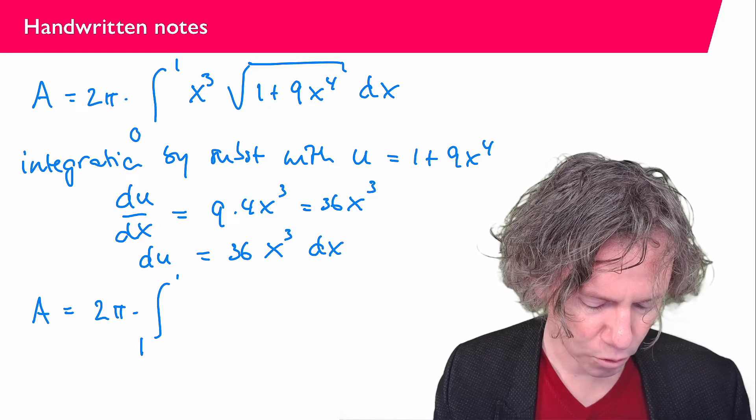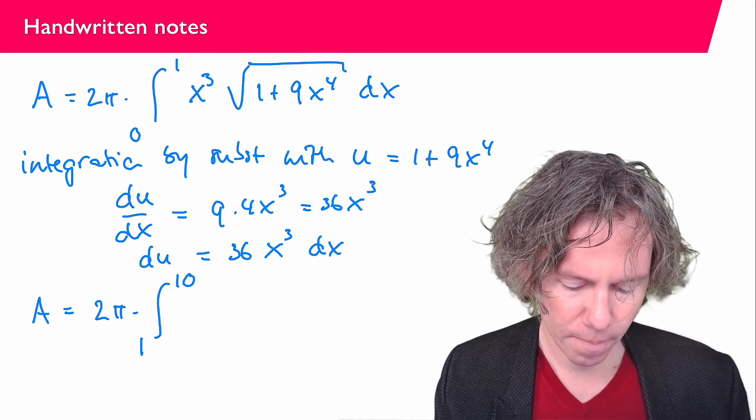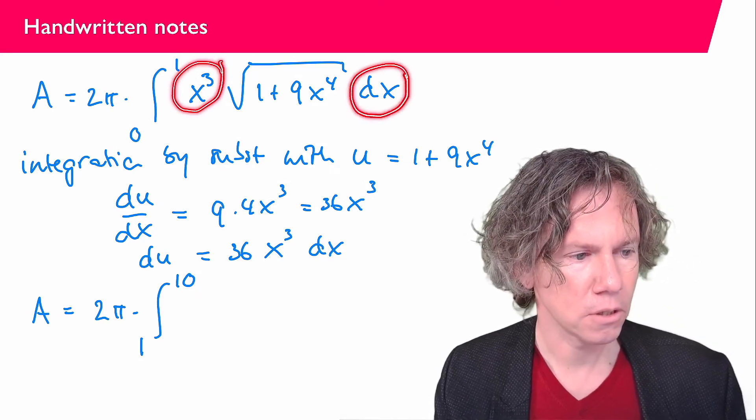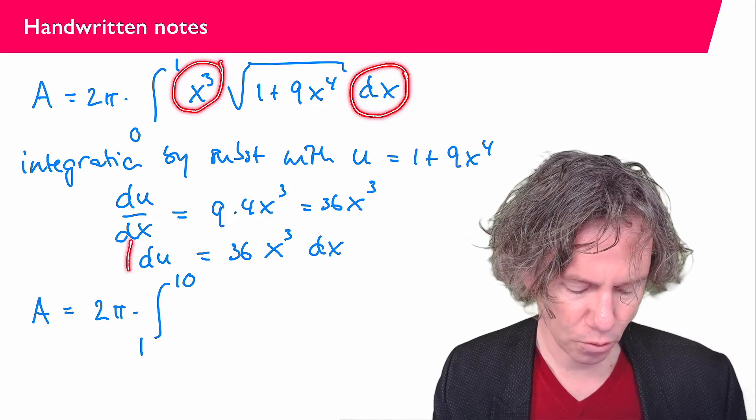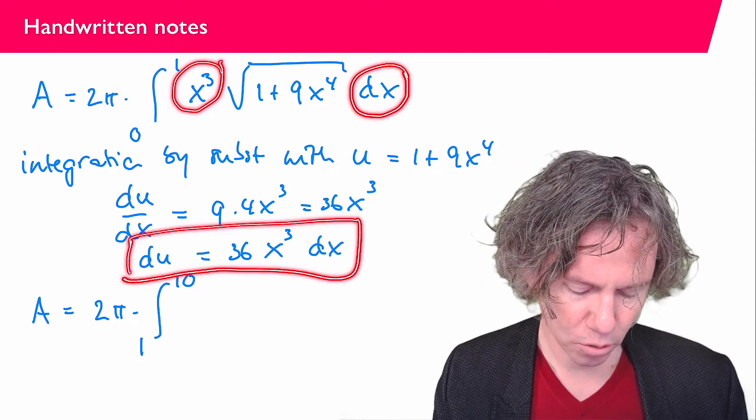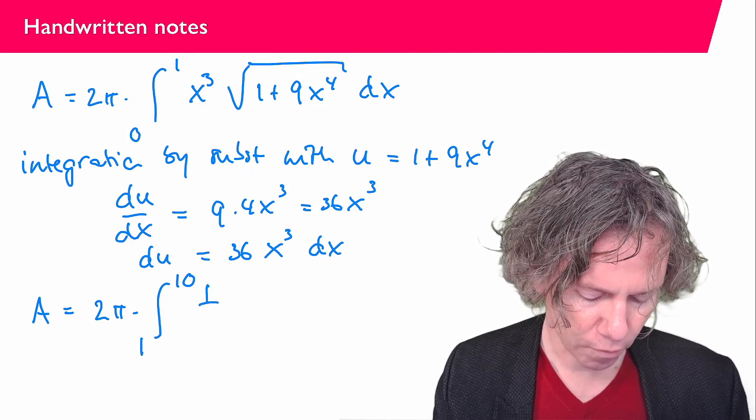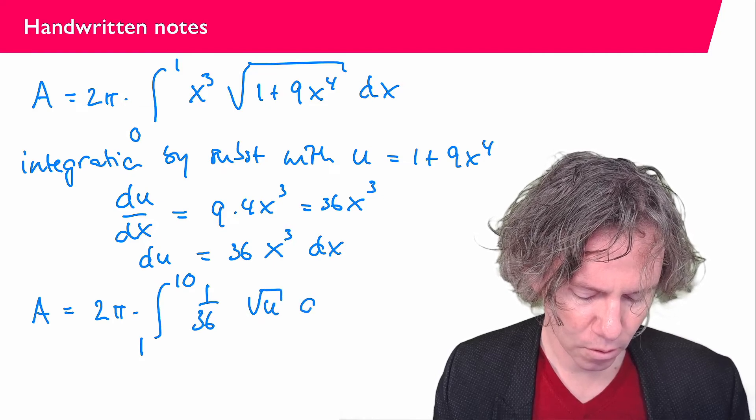So we get the integral from 1 to 10 in terms of u. And then x³ dx, that is the same as 1 over 36 du, according to this rule here. So we get 1 over 36 square root of u du.